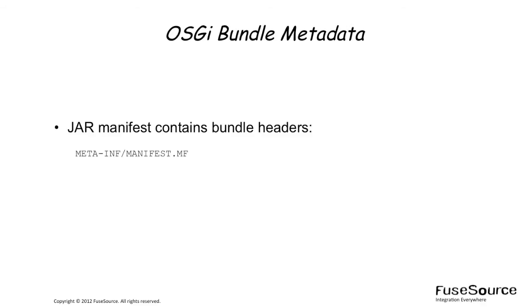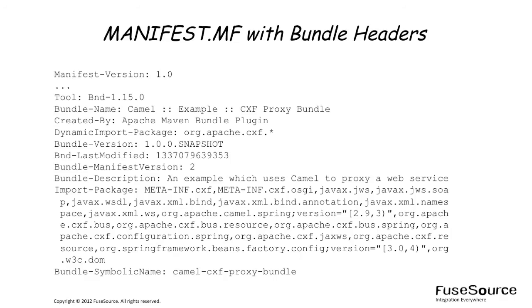Recall what an OSGI bundle consists of. An OSGI bundle is a JAR file containing metadata embedded in the META-INF/manifest.mf file. The metadata consists of bundle headers in the manifest.mf file. The import package header is particularly important.